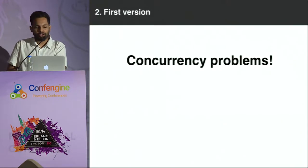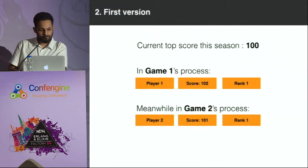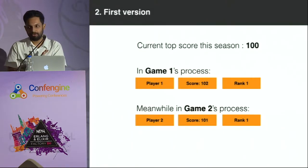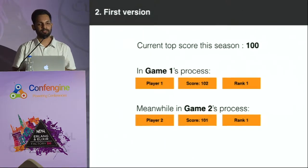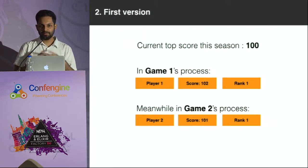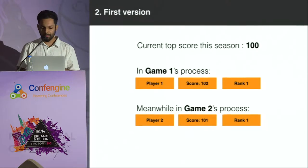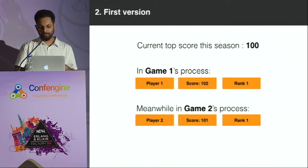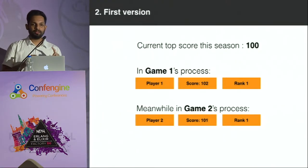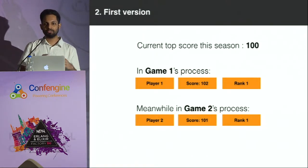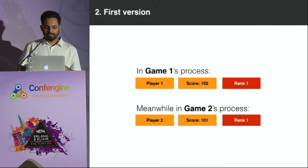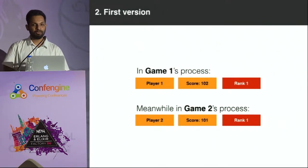Let's understand what's going wrong. Let's say the current top score in the season is 100. Two games just finished at the same time, and two asynchronous tasks were spawned to calculate the scores and ranks for the players. In each task, the algorithm would find one top scorer because there is one player whose score is more than 100 in each game. So when these tasks finish execution, we'll end up with two players with rank one.